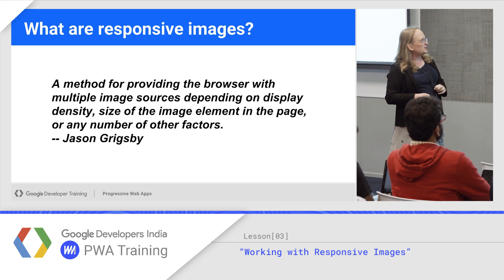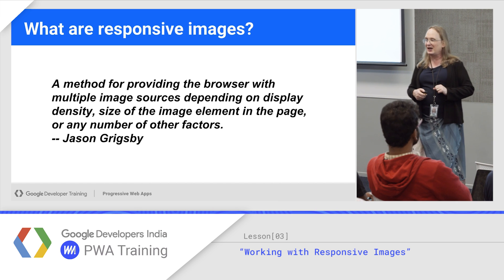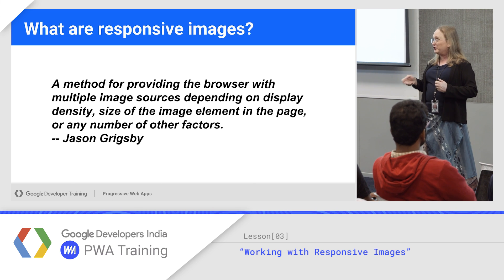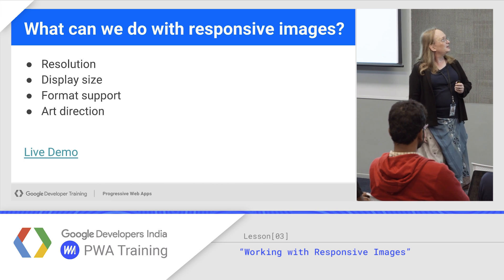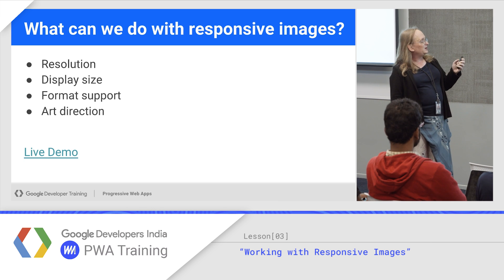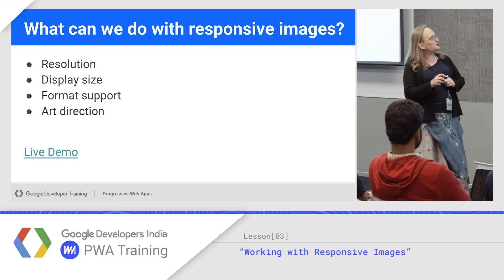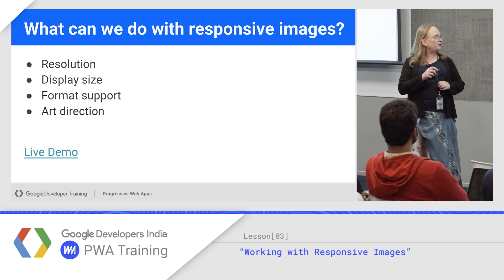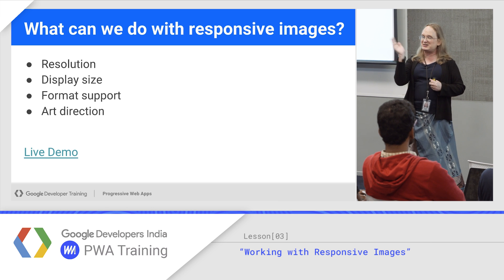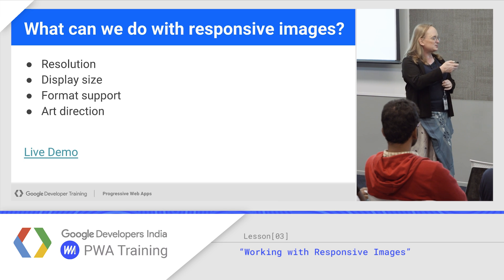Responsive images — the long definition breaks down to helping the browser pick the best image for your current conditions. What can we do with responsive images? You could serve different images for different resolution screens, different images for different display sizes, or serve based on different formats or art direction. There's a demo of re-changing images as you resize the screen, and I'll show you a similar demo later.